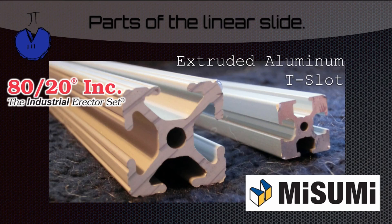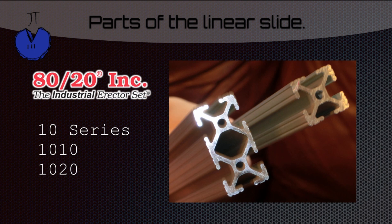Now let's start with the parts of the linear slide. You can use two different forms of extruded aluminum T-slot. We used 80-20 extruded aluminum — it's heavier but it's stronger, and it's also more expensive. The smaller one is Misumi, which is lighter and just smaller. Here are two common forms of 80-20 used in the First Tech Challenge. They're both part of the 10 series. The one on the right, the smaller one, is the 10-10. The one on the left, the larger one, is the 10-20, which is basically like having two pieces of 10-10 stuck together.